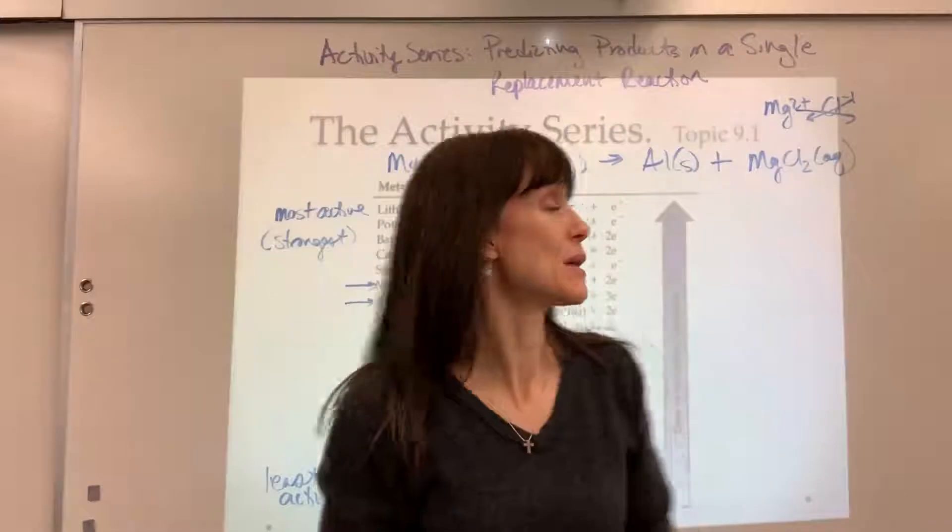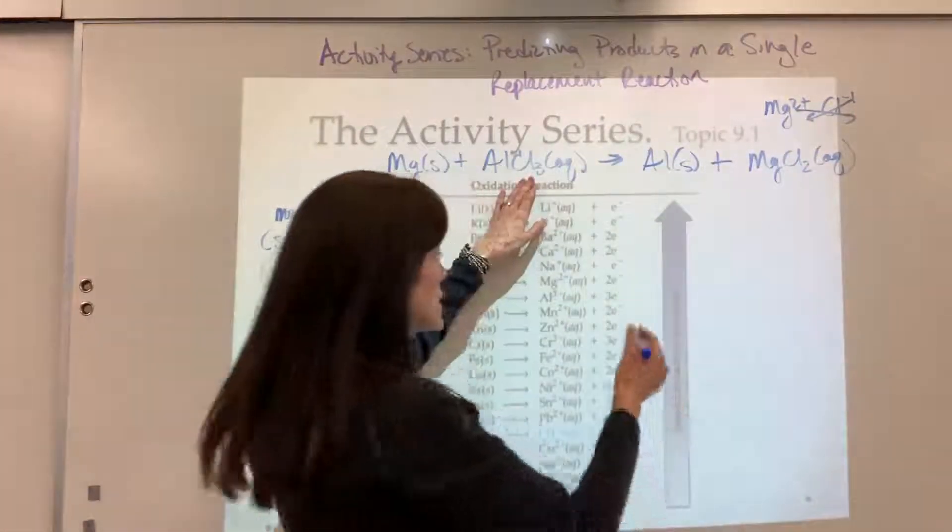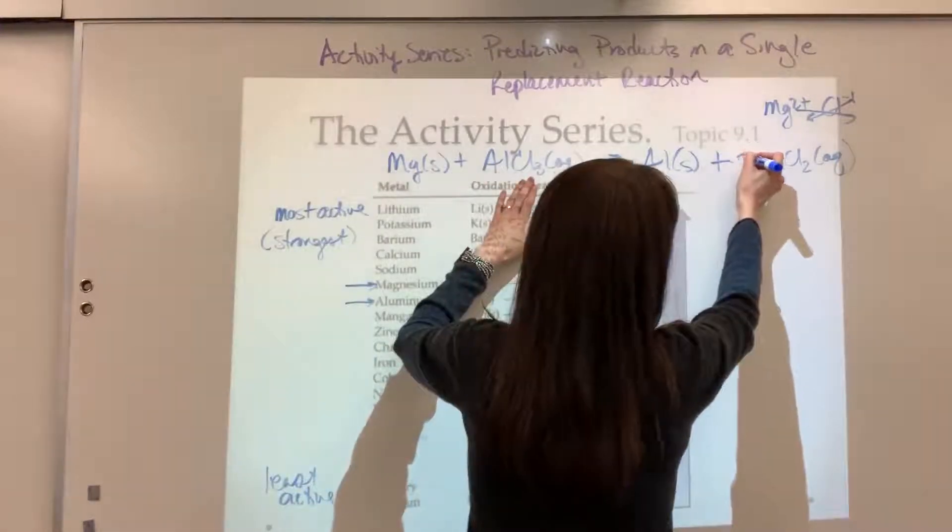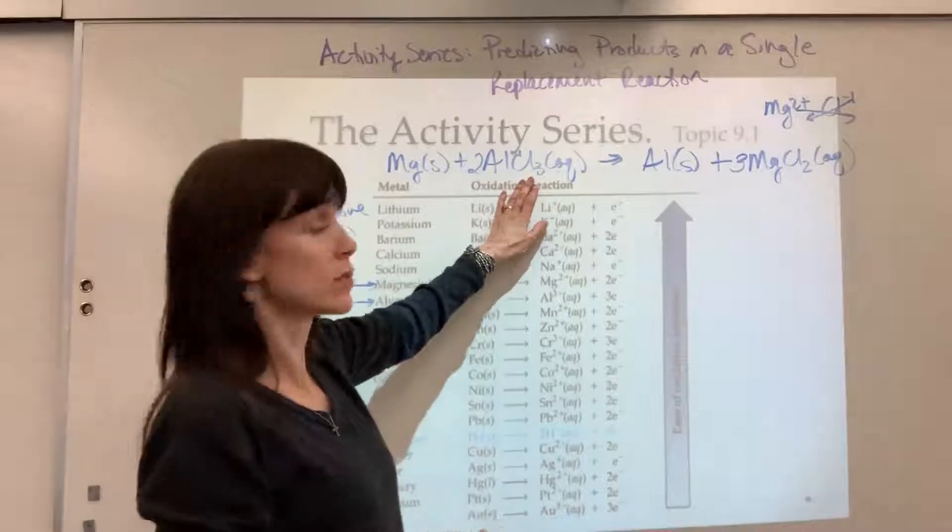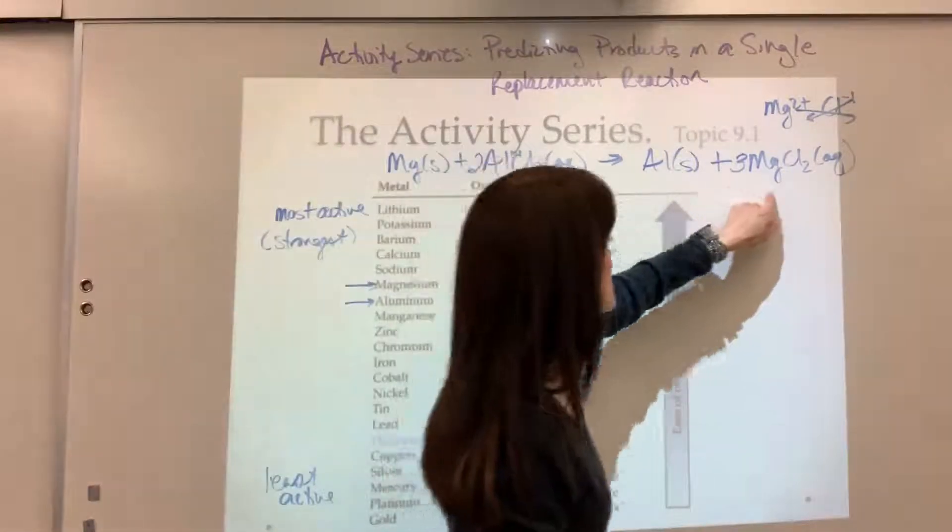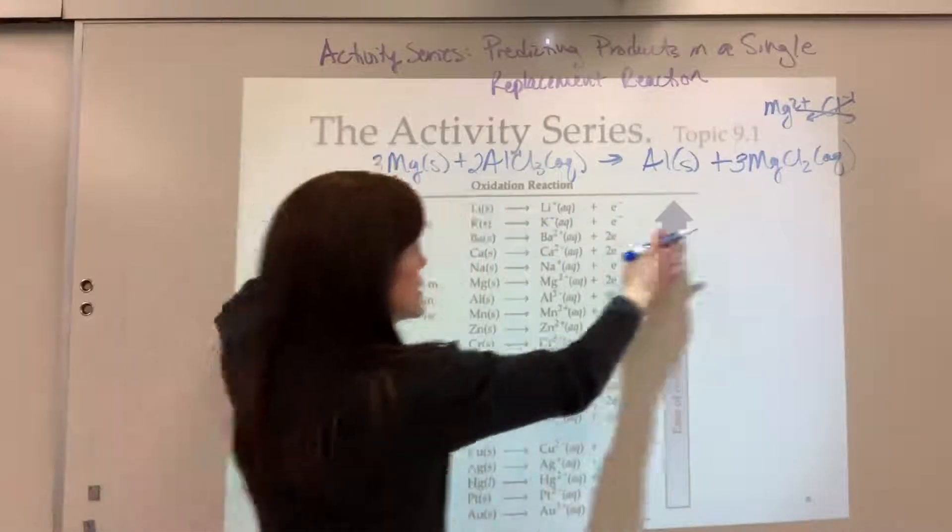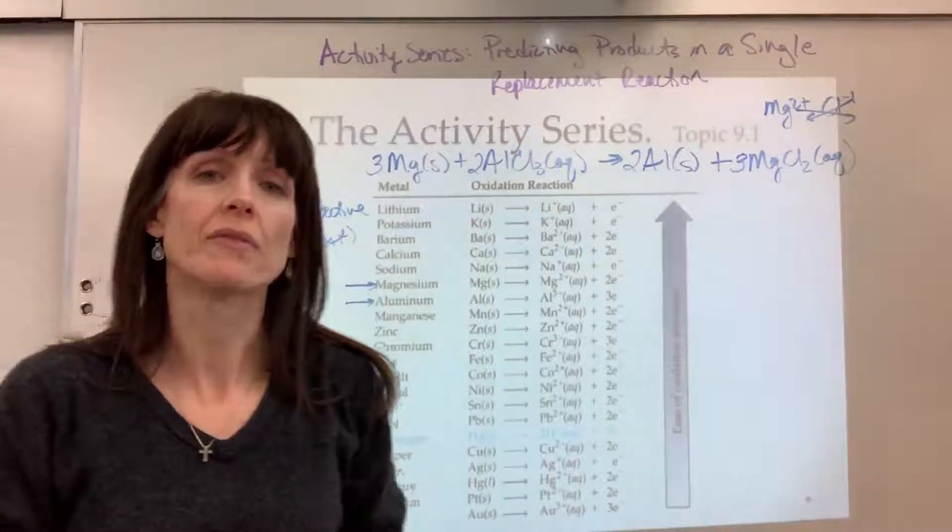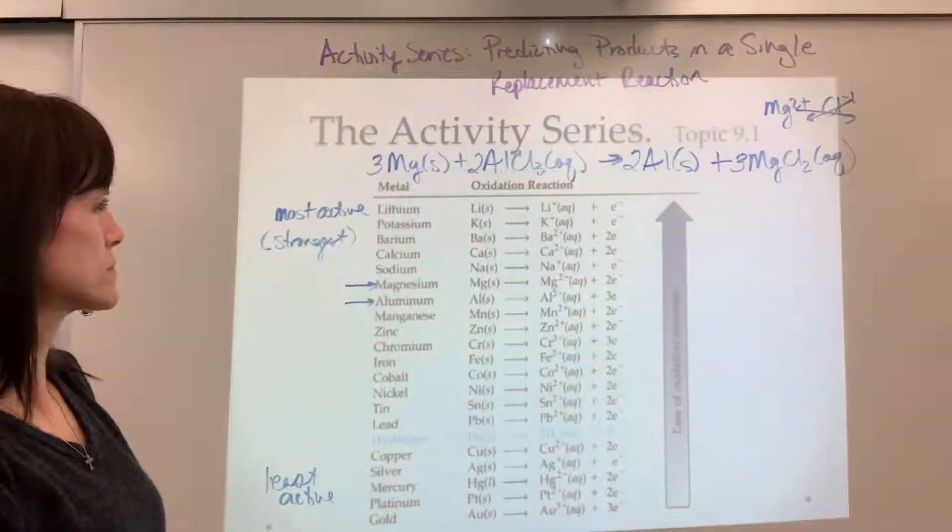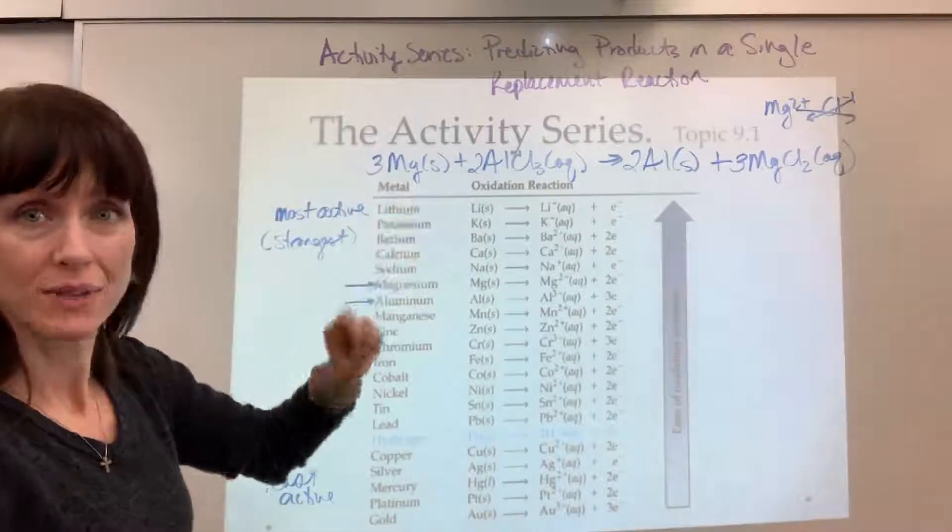Last thing I do is I balance. Oh look, we have three chlorines and two chlorines, so I'm going to put a 3 in front of the magnesium chloride, a 2 in front of the aluminum chloride. I have six chlorines, six chlorines, which means I need three for magnesium, three for magnesium, two aluminum, two aluminum. Now we have our balanced single replacement reaction.